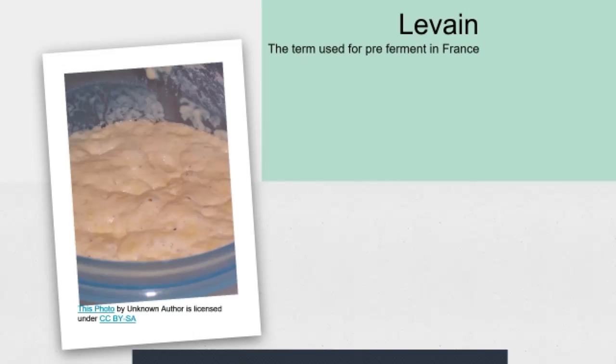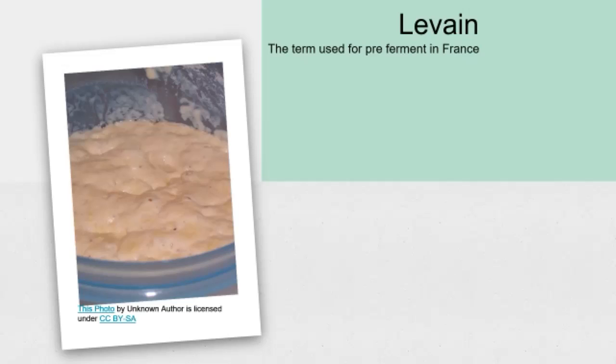The next word is levain. This is the term used for pre-ferment in France.